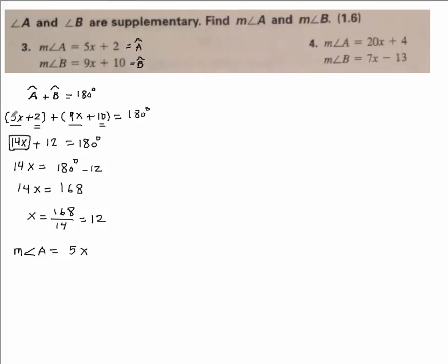So measure of angle A is equal to 5x plus 2, must be equal to 5 times, now I know what x is, 12 plus 2. So I can calculate that: 5 times 12, that gives me 60. 60 plus 2, so that would be 62. The measure of angle A is 62.